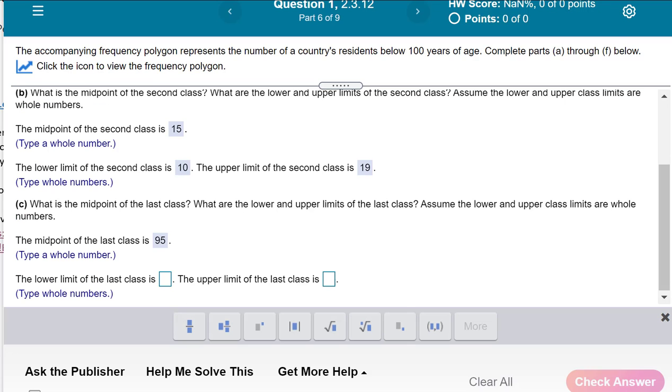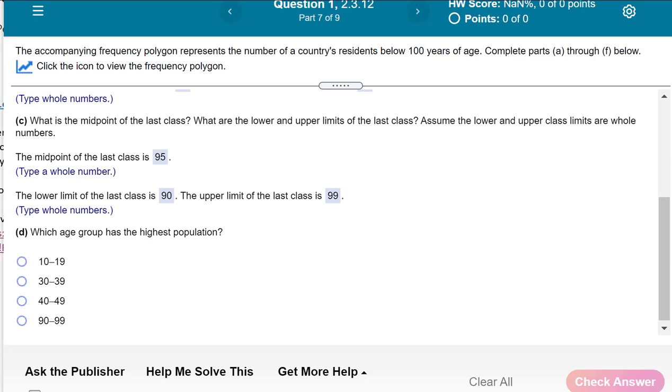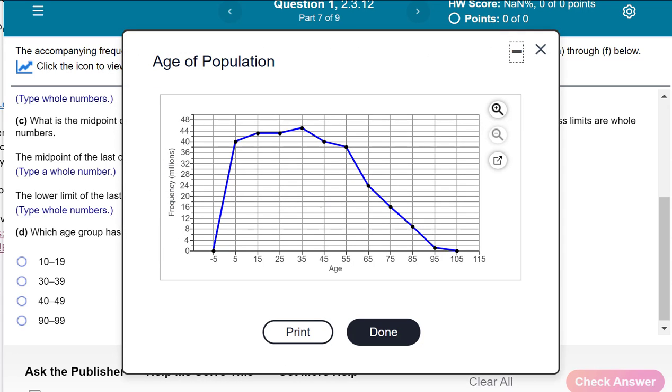So let's write the answers. It's 95, and then the lower class limit, as I said, is 90, but the second one is 99. Which age group has the highest population? The highest population is the group that has the highest point here, so this is going to be this one, which is 35. But if you want to figure out the class of 35, subtract 5, that gives you 30, and then add 5 gives you 40, but subtract 1 will be 39. So it's 30 to 39, and that should conclude the question.